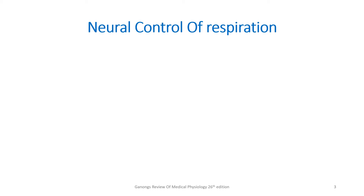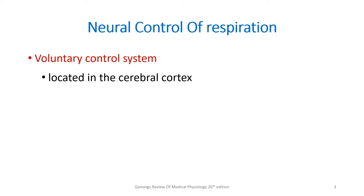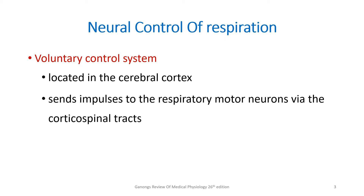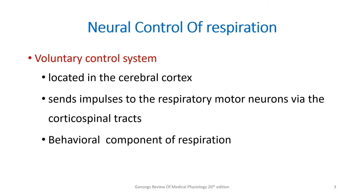Moving on to the details of neural control of respiration, we start with the voluntary control system. Voluntary control is mainly by the cerebral cortex, which sends impulses to the respiratory motor neurons via the corticospinal tract. The behavioral component of respiration is controlled by this voluntary control system. The best example is that we can hold our breath because of this voluntary control system.